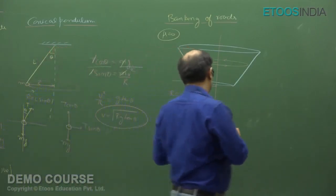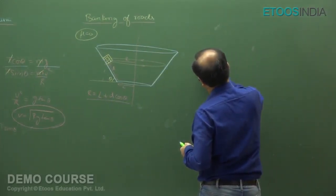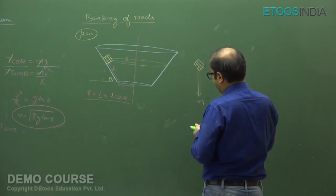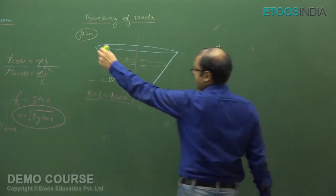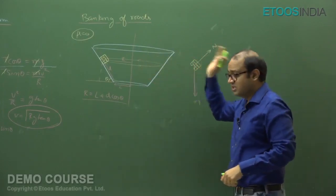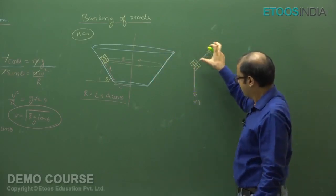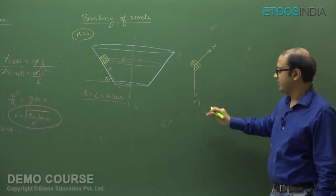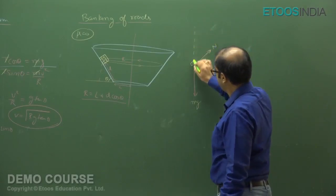Step 2: draw the free body diagram of the car. The forces acting are Mg downwards and the normal force N perpendicular to the surface. Friction is absent. There is no centripetal force or centrifugal force as separate entities. The component of normal is what acts as the centripetal force. So there are only two real forces: Mg and N.